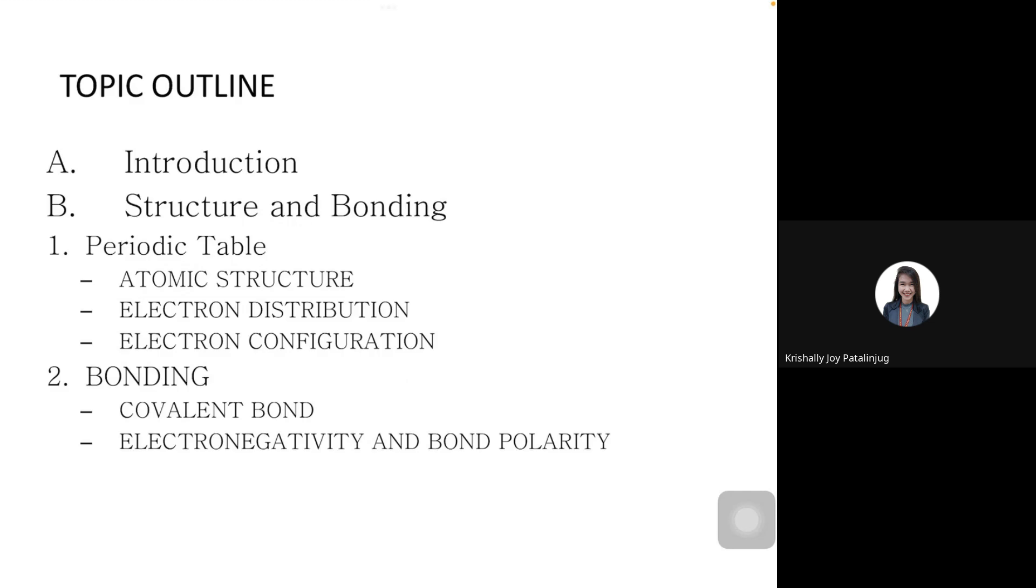I have decided to divide the topics into two main parts. First, we'll discuss the introduction to organic chemistry. Then later, we will review ideas related to structure and bonding. That would include periodic table, atomic structure, electron distribution, electron configuration. Then under bonding, we will give emphasis to one type of bond, the covalent bond, since this is commonly encountered in organic molecules.